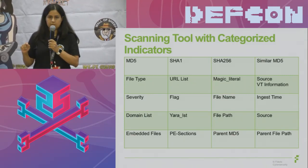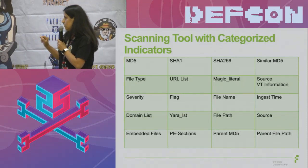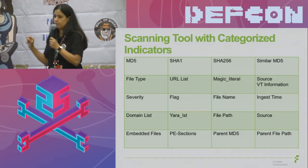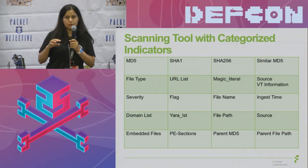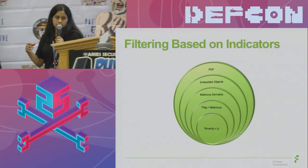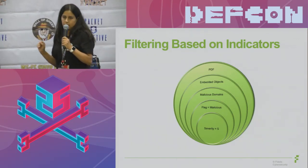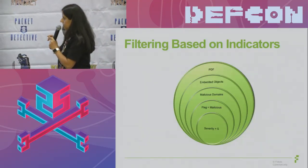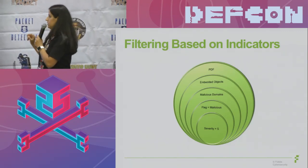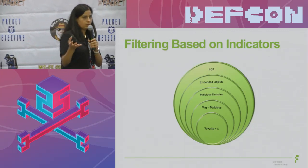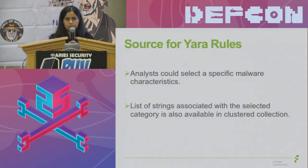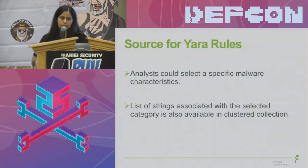The list of functions in YARA rules matching the particular file is extracted as a list. File path and source are recorded as indicators for collecting information from the database. Embedded files — the list of objects embedded in the file — will also be displayed. PE sections are provided in detail. Parent MD5 and parent file path are included: if the file is embedded and being analyzed, you will have a link to the parent. So if you're analyzing results and interested in a PDF with embedded objects, malicious domains, and a severity of five, you can apply a filter and extract that data.